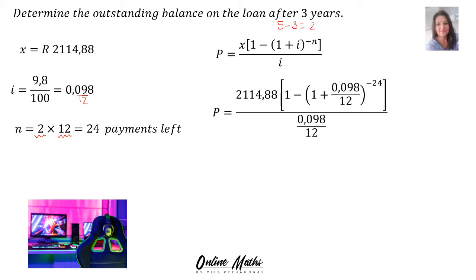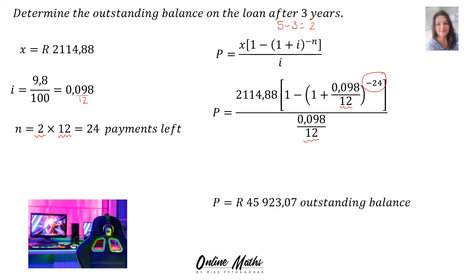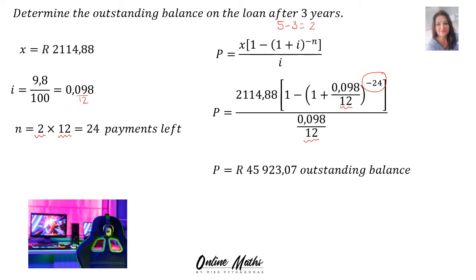Into the present value formula: in X's place we substitute R2,114.88, bracket 1 minus bracket 1 plus I, which is 0.098, divided by 12 because it's monthly, raised to the power of negative 24 — because that's how many payments are left — divided by 0.098 over 12 because it's monthly. Slot it into your calculator all in one go with no rounding off until your final answer. The outstanding balance will be R45,923.07.